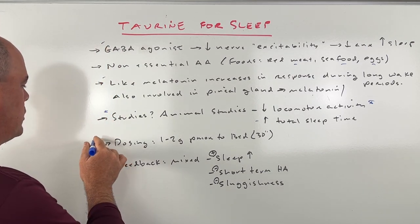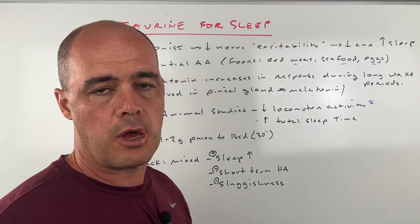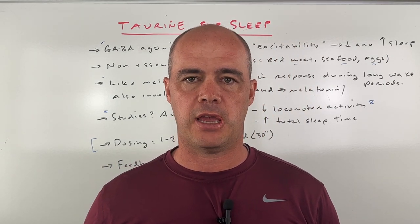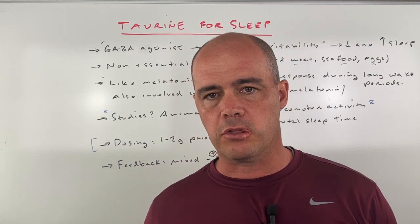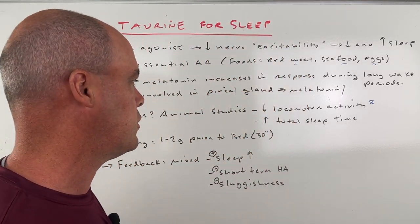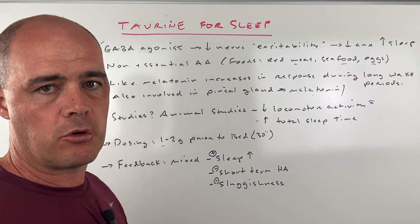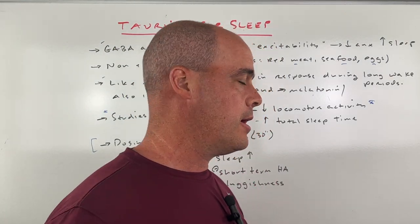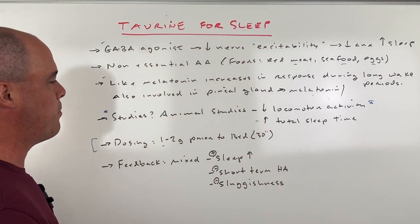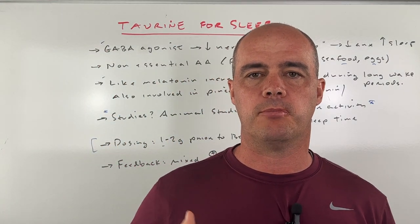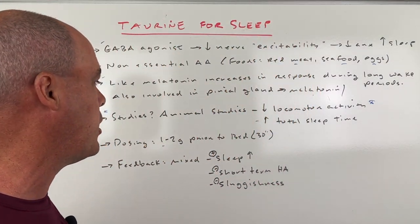Now, what about dosing? As a general rule of thumb, we've seen taurine doses up to 6,000 milligrams a day. I wouldn't start out anywhere near that amount. If you wanted to use it to see if it helps sleep, start out probably at 1,000 milligrams or one gram, maybe 30 minutes before bedtime. You can probably go up to two grams or 2,000 milligrams, depending on how you're responding to it.